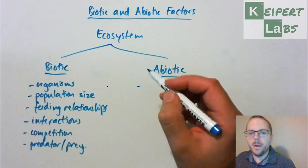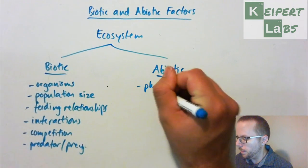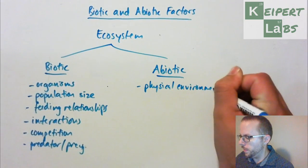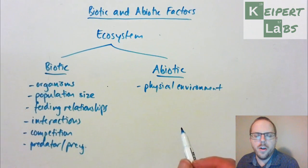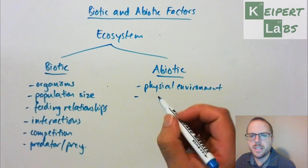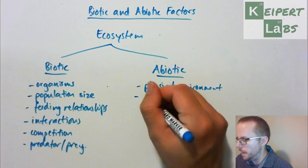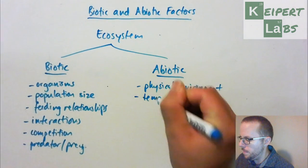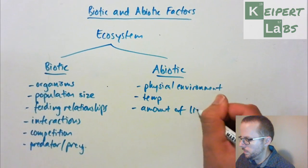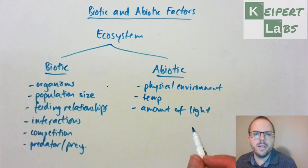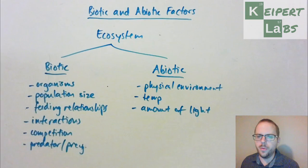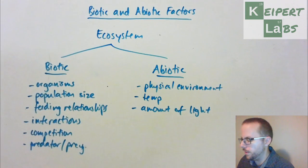When thinking about the abiotic factors, we're thinking about the physical environment. An ecosystem is a community of organisms interacting with their physical environment, and there are aspects of that environment we're considering here. Maybe it's temperature, maybe it's the amount of light — in terms of sunlight passing through the trees, the sunlight that penetrates through the upper layers of the ocean, or the things that grow under the canopy of the rainforest.